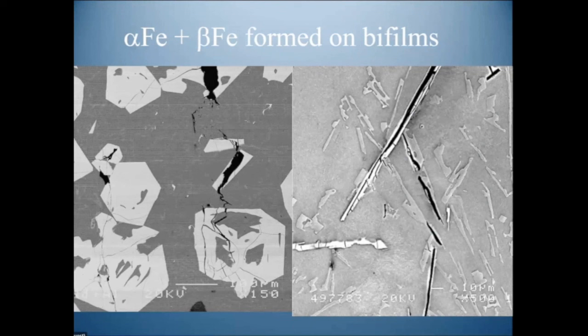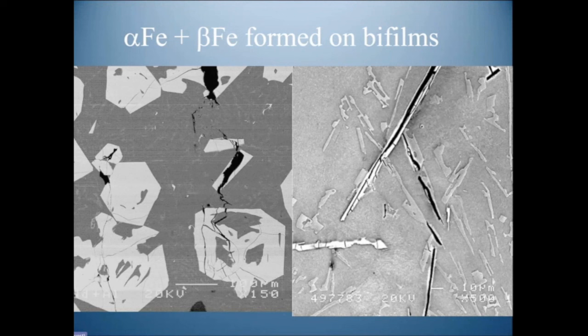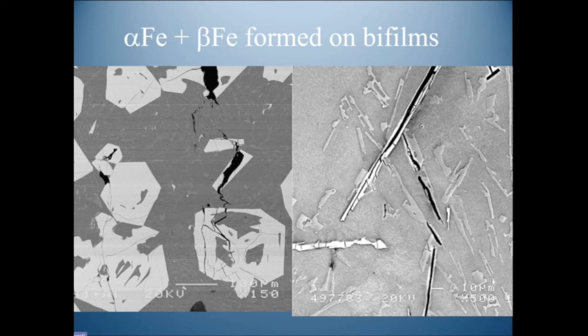Here are bifilms on which inclusions have formed — in an aluminium alloy. On the left we have alpha iron precipitates which have grown around the compact bifilm. Because alpha iron has a cubic lattice with high symmetry, it can grow in any direction, wrapping all around and holding the bifilm in place so it cannot open. This is why alpha iron is a relatively good precipitate to have.